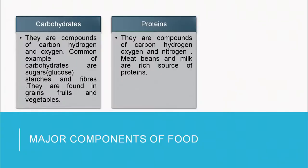Proteins are organic compounds made up of carbon, hydrogen and oxygen, and they also contain nitrogen. Rich sources of proteins are milk, beans, all pulses and legumes.